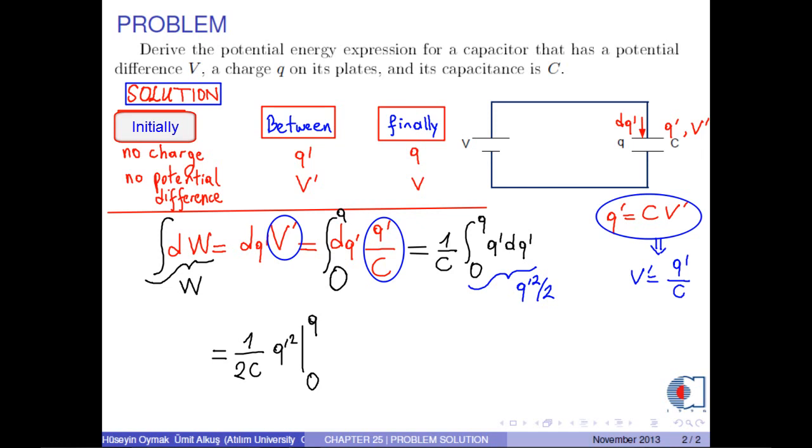Finally, we obtain the total work or the potential energy expression for this capacitor as Q squared over 2C. We know that Q is C times V.